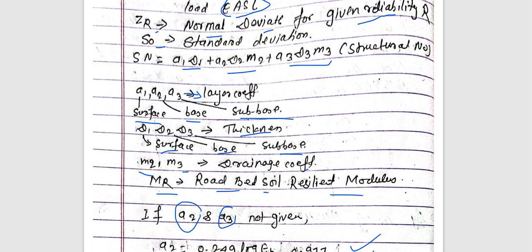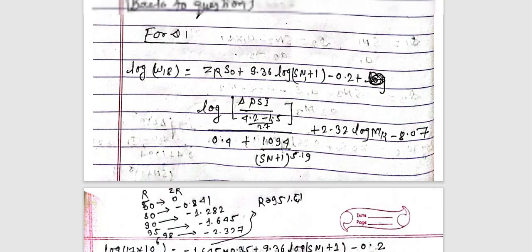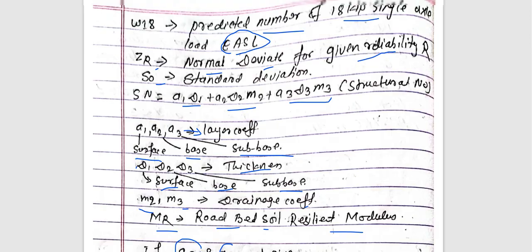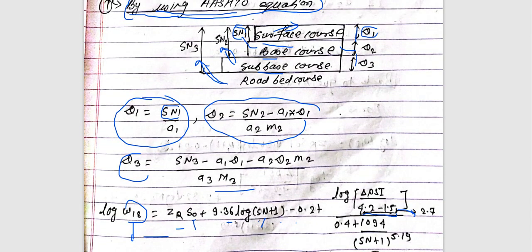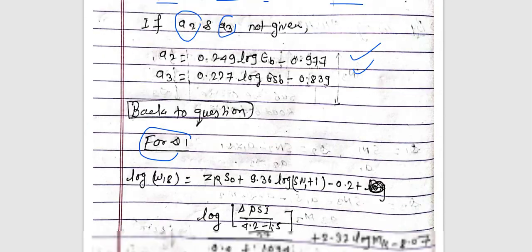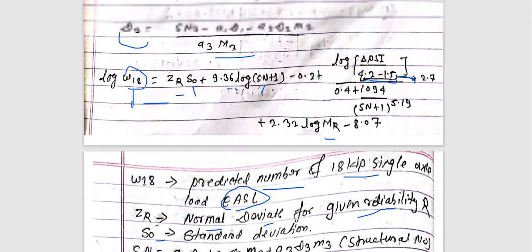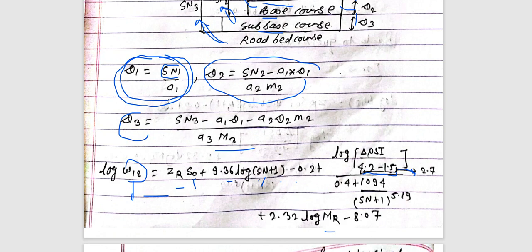It follows: knowing a1, d1, a2, d2, a3, d3, we go back to the question to find d1. To find d1 we first find SN1, then SN1 is used to find SN2, and SN2 is used in the equation.